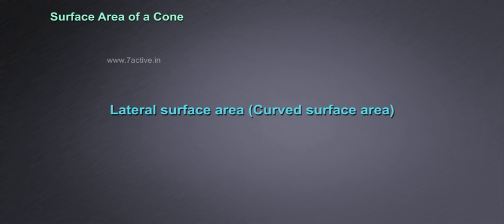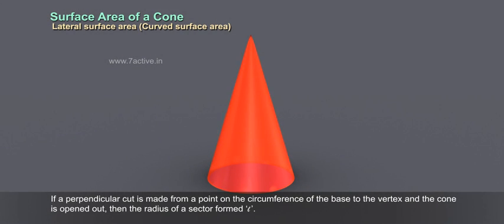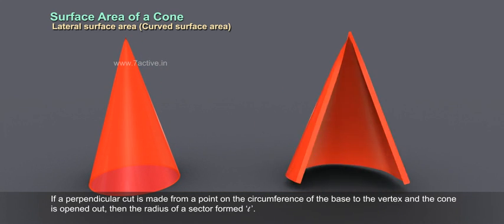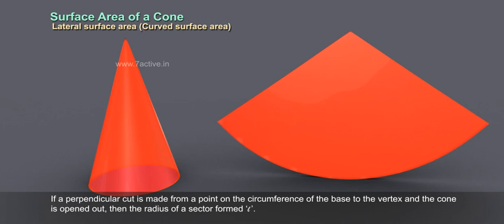To find lateral surface area or curved surface area, do this activity. If a perpendicular cut is made from a point on the circumference of the base to the vertex and the cone is opened out, then the radius of a sector formed is L.